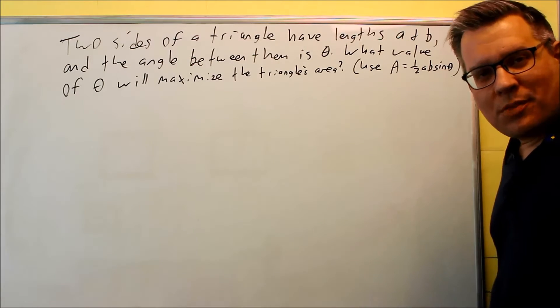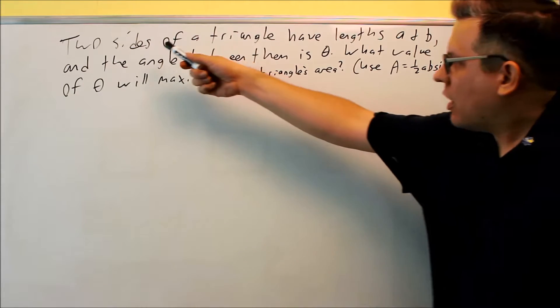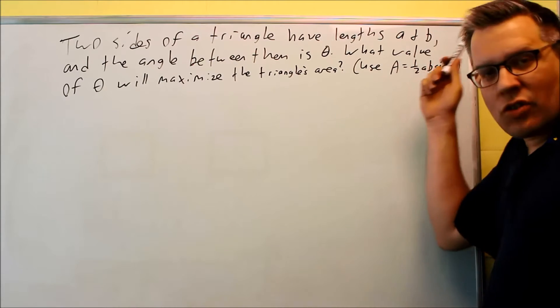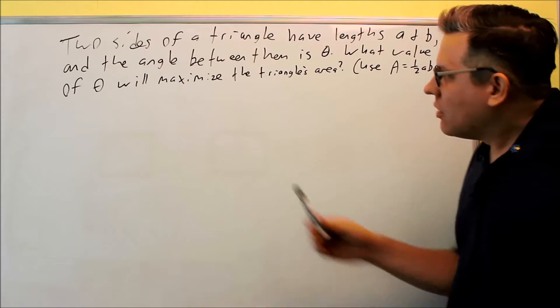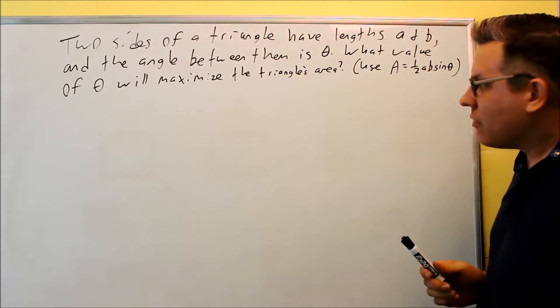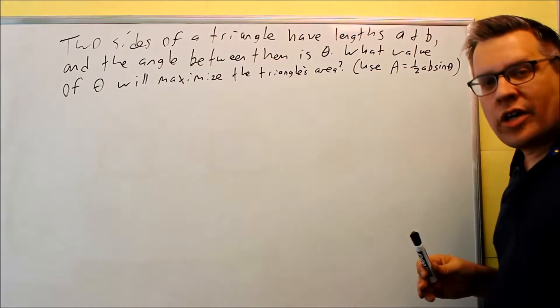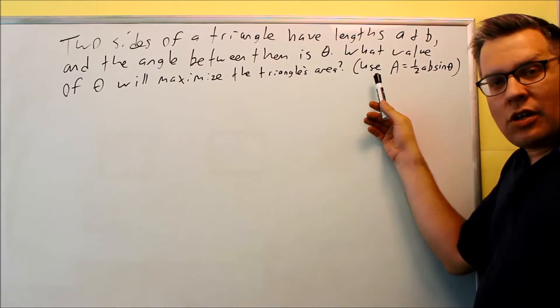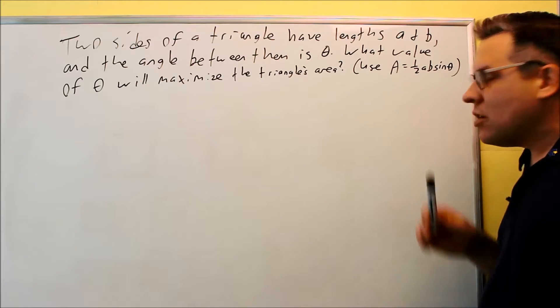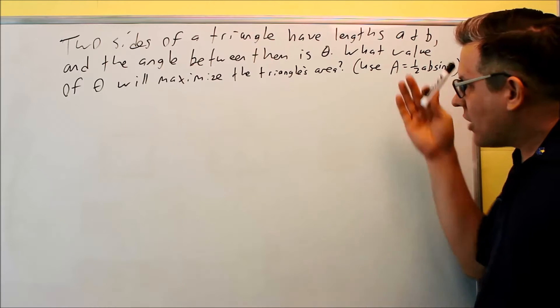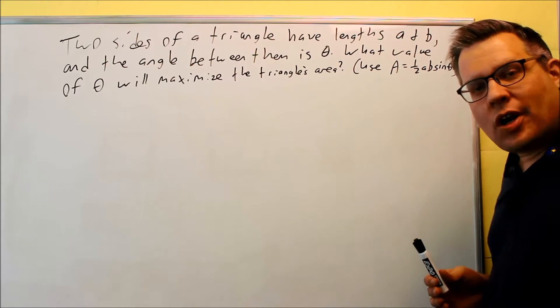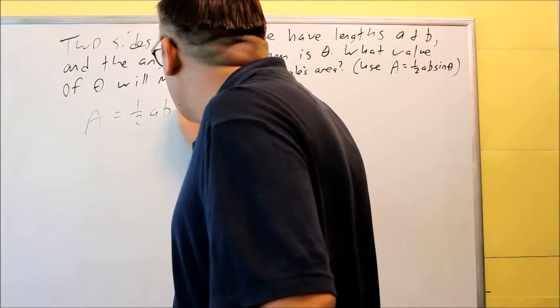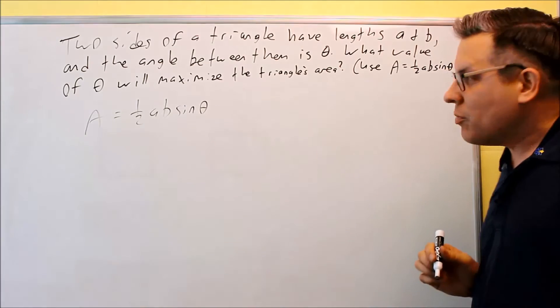All right, let's do one that has some trig. This problem says two sides of a triangle have lengths a and b. These are going to be fixed lengths - a and b are going to be constants in this case. It says the angle between them is theta, and asks what value of theta will maximize the triangle's area. It gives you a reminder in case you don't remember this formula from trig - the hint here says to use A equals one-half ab sine theta. So in this case the problem is easier because they tell you what formula to use. We'll start with area equals one-half ab sine theta.